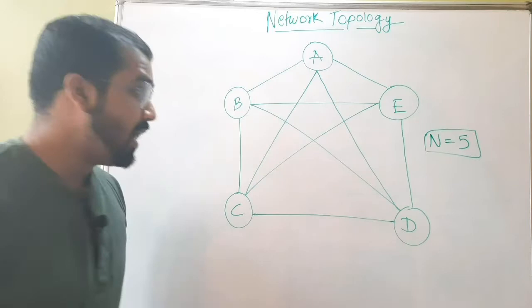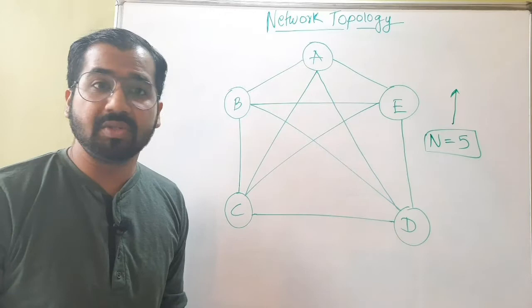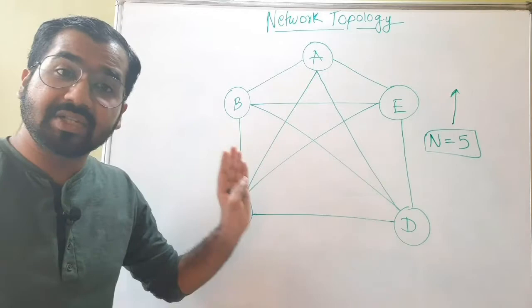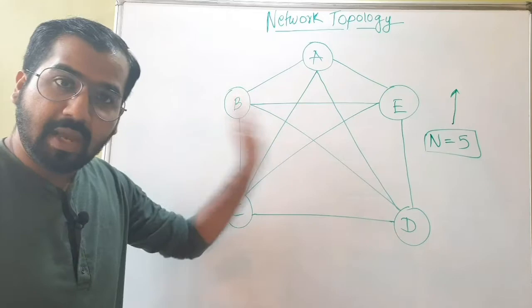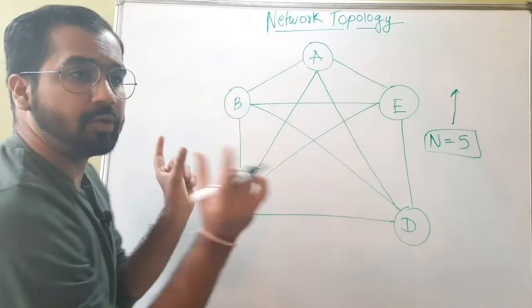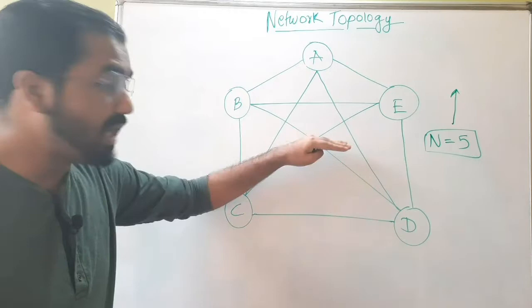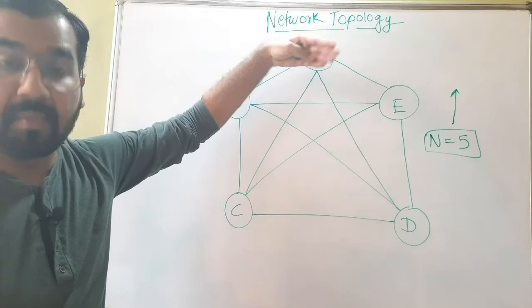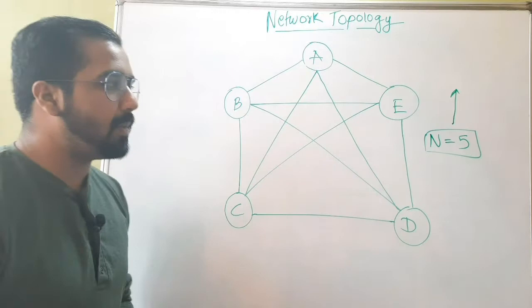In a network with thousands of devices, just imagine the number of cables required to interconnect all nodes in mesh topology. Since in mesh topology every two nodes must have a dedicated link between them, the cost of heavy cabling will increase tremendously as the value of n increases.